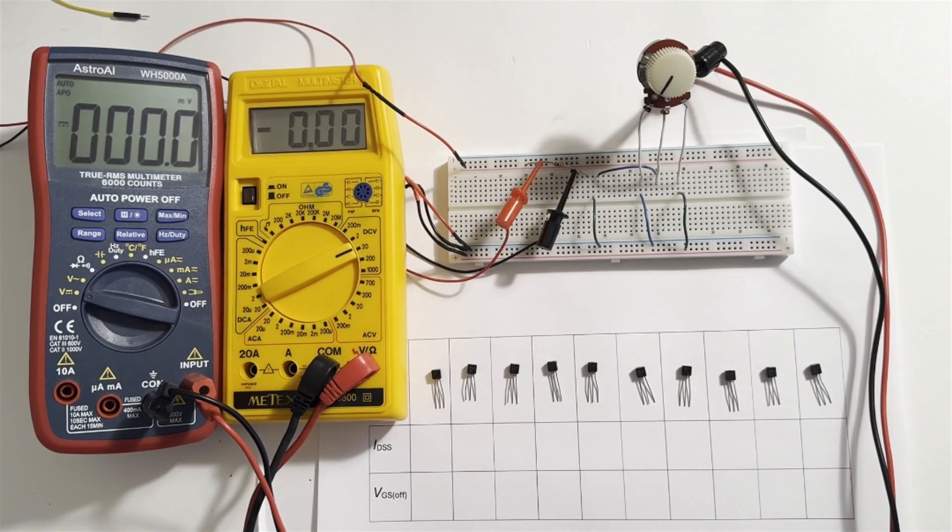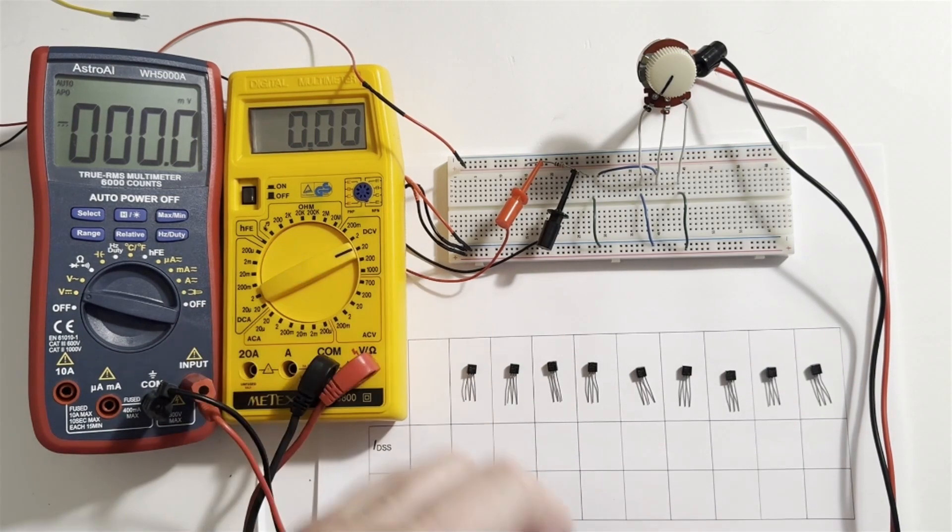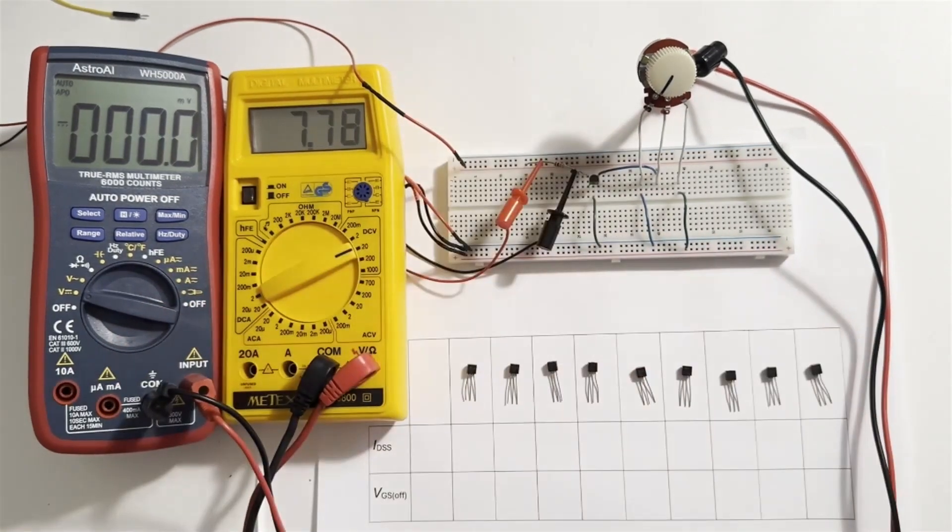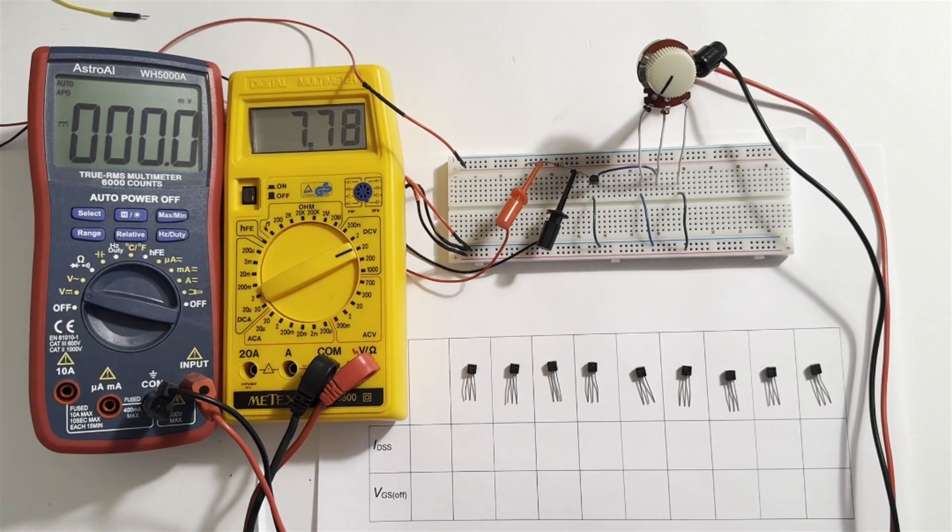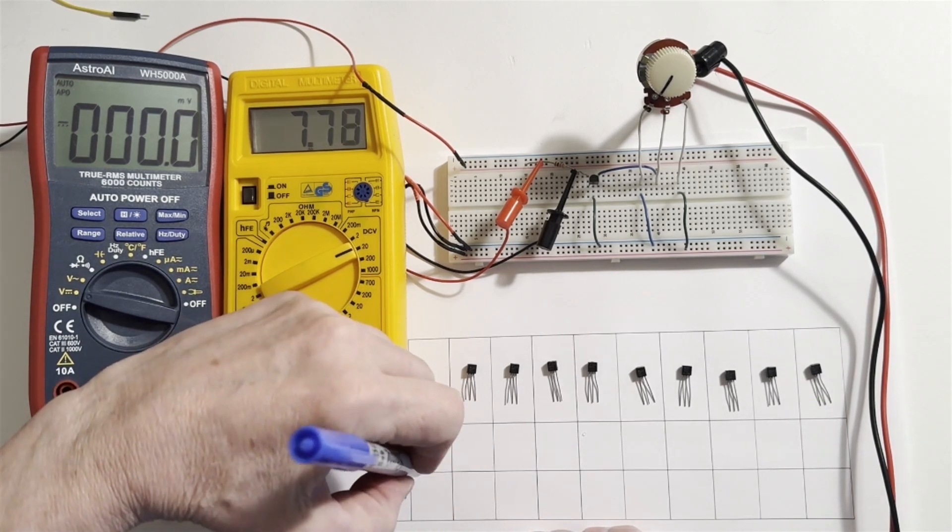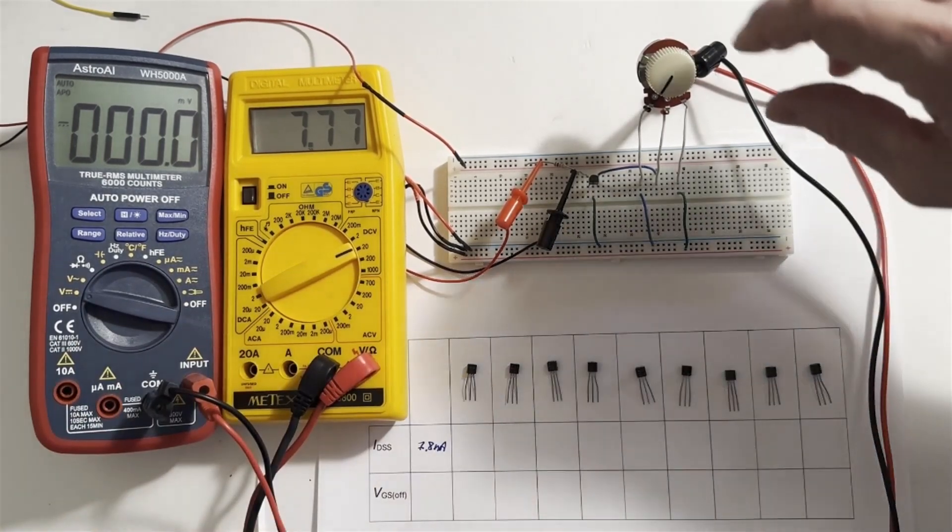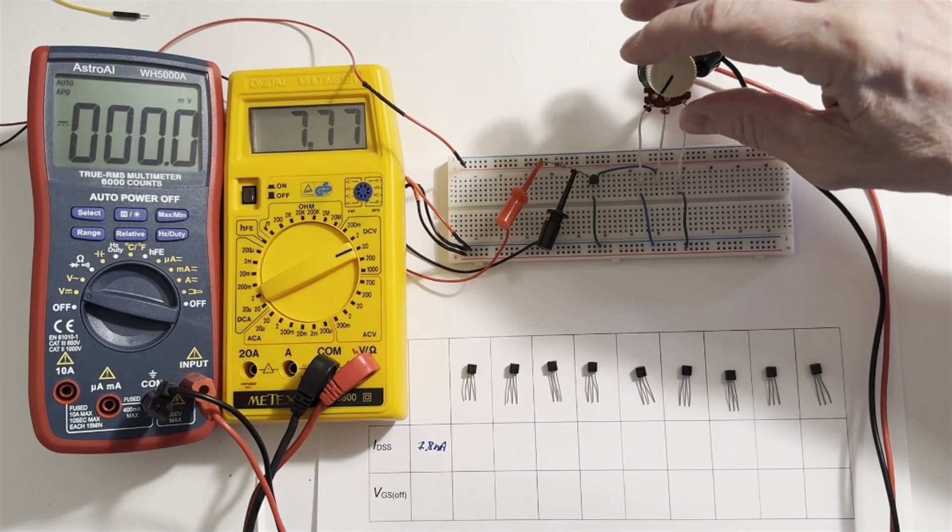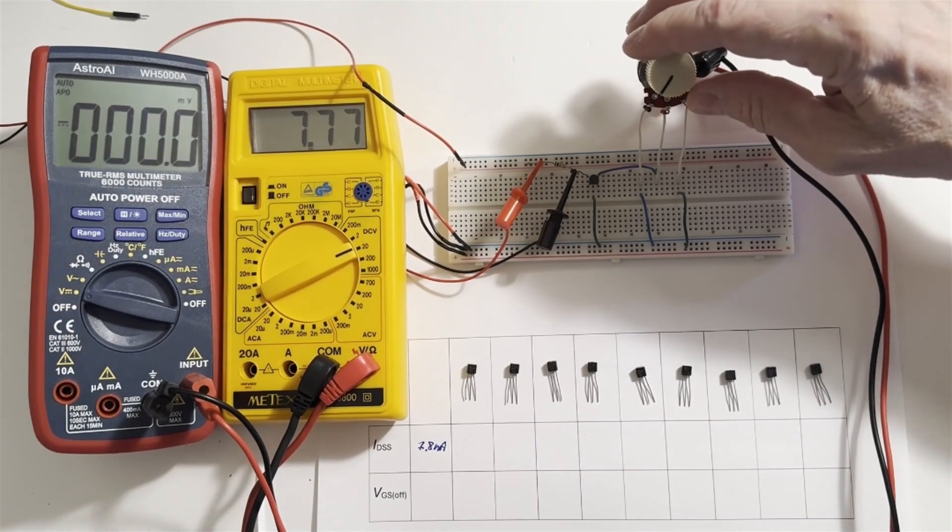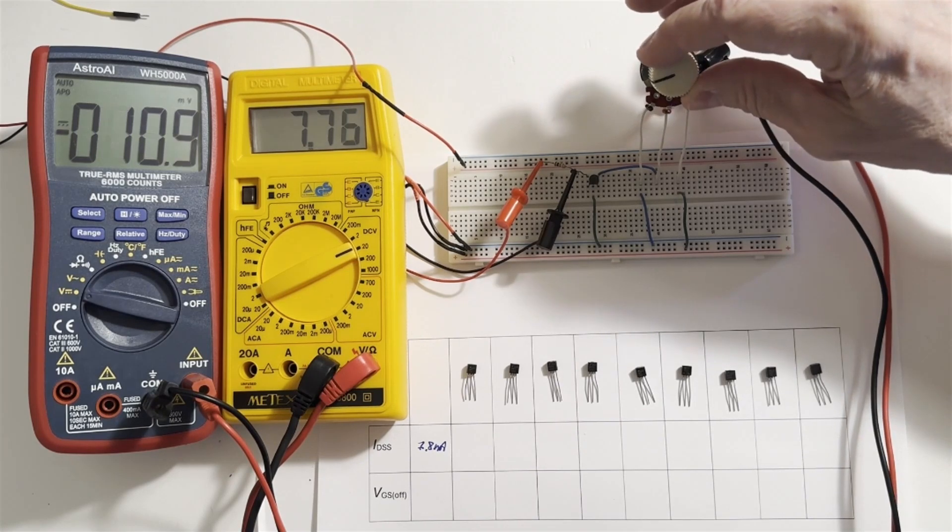Okay, so here's our 10 randomly selected MPF-102 JFETs. The left hand meter is going to be reading VGS. The right hand meter will read drain current in milliamps. And this potentiometer will be used to adjust VGS. So let's see what we get with our first JFET. All right. Since there's no VGS applied, the current flowing is IDSS. And let's call that about 7.8 milliamps, I'd say. All right. Now we're going to increase our VGS value negatively until our drain current drops to zero. Then that will be our VGS-OFF on the left hand meter.